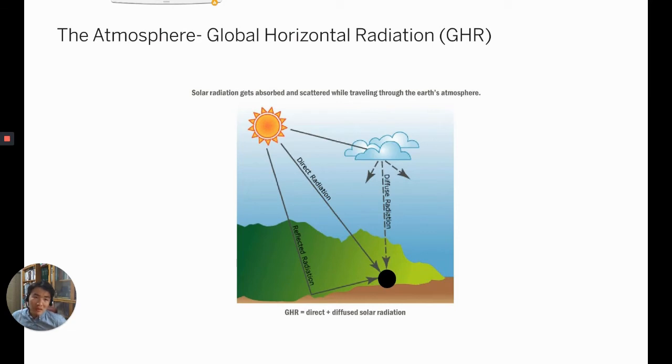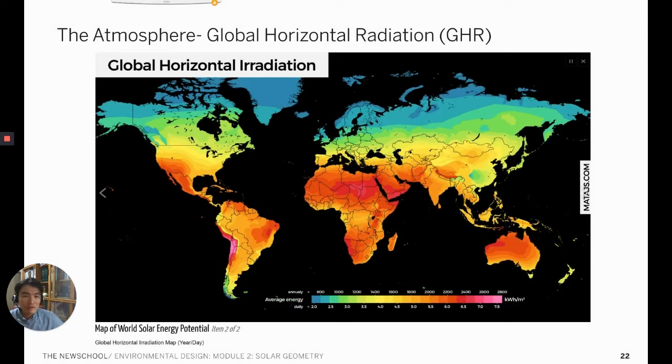This is depending on cloud coverage or surrounding elements. A total amount of solar radiation adding both direct and diffused solar radiation together is what's called global horizontal radiation. We use this GHR value in order to determine how much solar radiation there is for the site. This map shows the overall world GHR being different for different parts of the world.